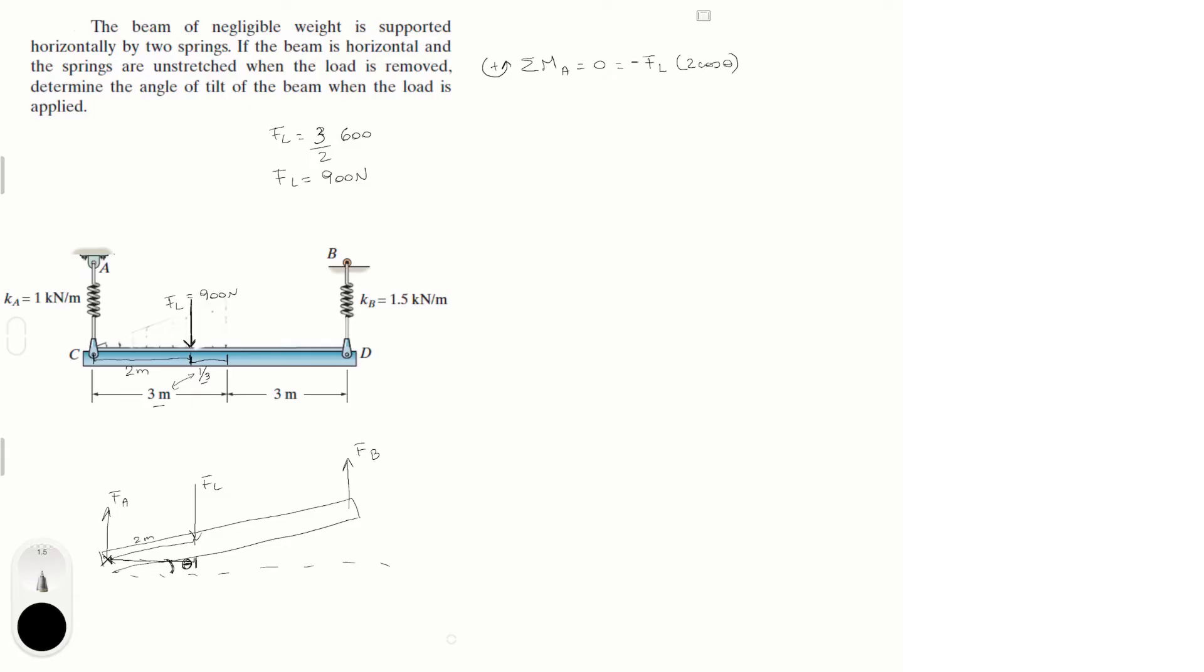And it's negative because it's trying to turn it clockwise, assuming counterclockwise is positive. And then we have F_B, which is F_B, and it's going straight up, times the distance from here all the way to here. Now again, you don't know this length, but you know that three plus three is six, which is the length of the whole beam, which would be the hypotenuse of this triangle. So this would be times six cosine of theta. And this is positive because it's trying to turn it counterclockwise.